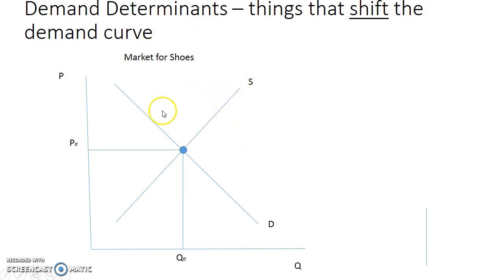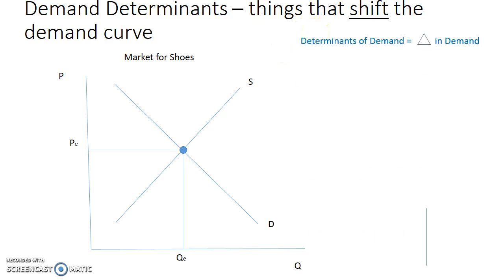It's either increasing demand, which is a shift to the right, or it's decreasing it, which is a shift to the left. There's something about the buyers — the composition of the buyers has changed. There are five determinants of demand that cause this change in demand, and we need to know these five determinants and be able to recognize examples and apply them. An easy way to remember them is the hashtag IPEP, and we'll go through what each one means.